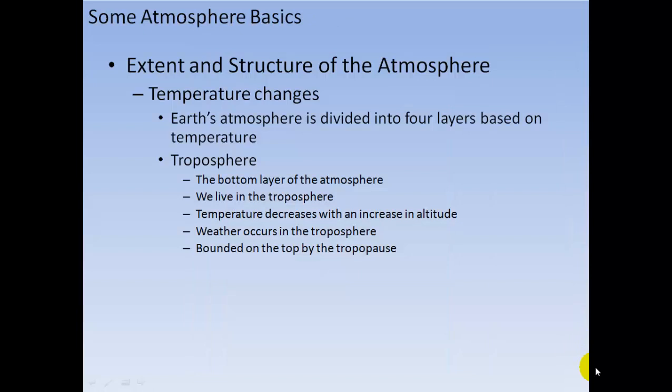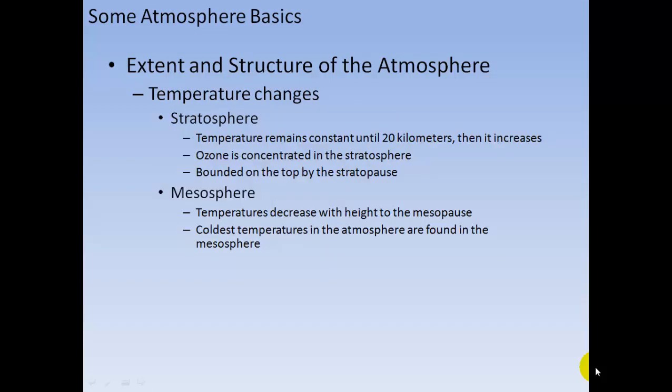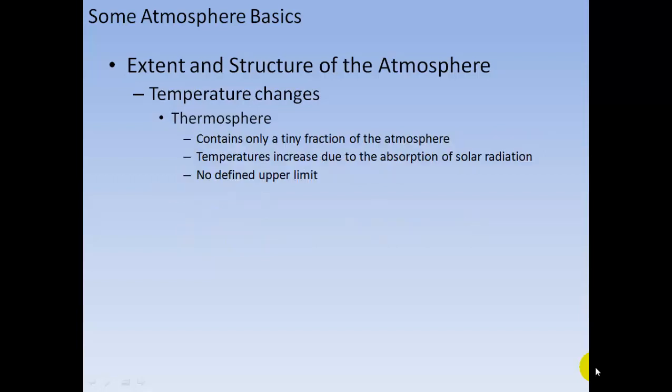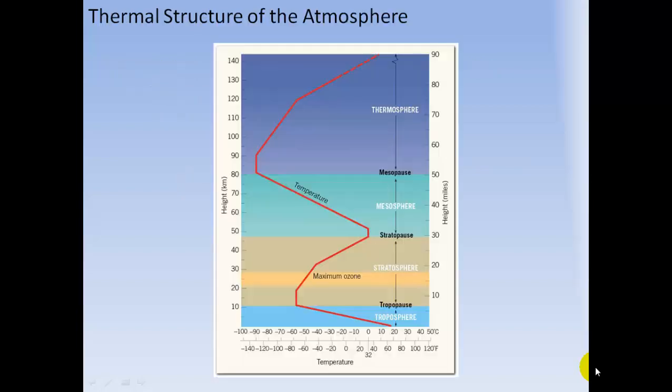Earth's atmosphere is divided into four layers based on temperature. The troposphere is the bottom layer where we live — temperature decreases with altitude and all weather occurs there. The stratosphere sees temperature remain constant to about 20 kilometers then increase; ozone is concentrated there. The mesosphere has temperature decreasing with height to the mesopause, with the coldest temperatures in the atmosphere. The thermosphere contains only a tiny fraction of the atmosphere; temperatures increase due to absorption of solar radiation, with no defined upper limit.